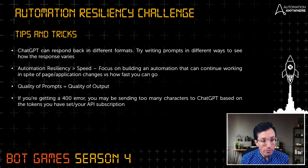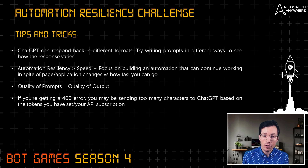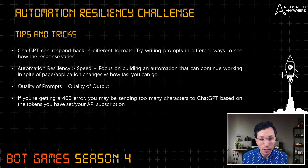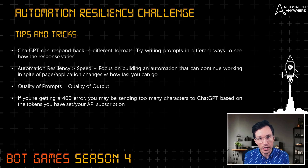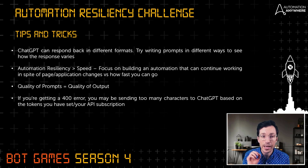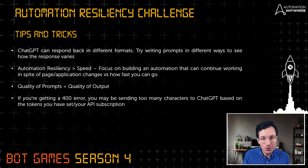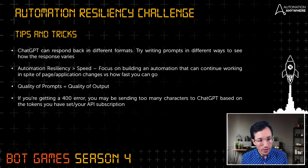With this challenge, automation resiliency is the big key over speed. Focus on building an automation that can continue working in spite of application and page changes, versus how fast you can go. Make sure your bot doesn't fail and is able to continue entering data and complete the exercise without failing — that's goal number one. Then goal number two can be speeding it up.